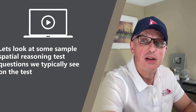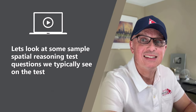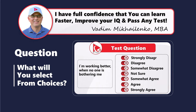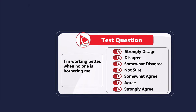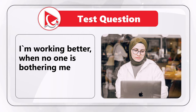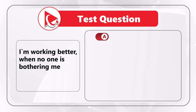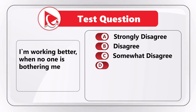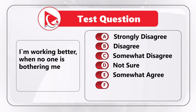Here's an amazing question we frequently see on the test. You're presented with the statement: 'I'm working better when no one is bothering me.' You need to select your answer out of seven possible choices: Choice A - Strongly disagree, Choice B - Disagree, Choice C - Somewhat disagree, Choice D - Not sure, Choice E - Somewhat agree, Choice F - Agree, and Choice G - Strongly agree.